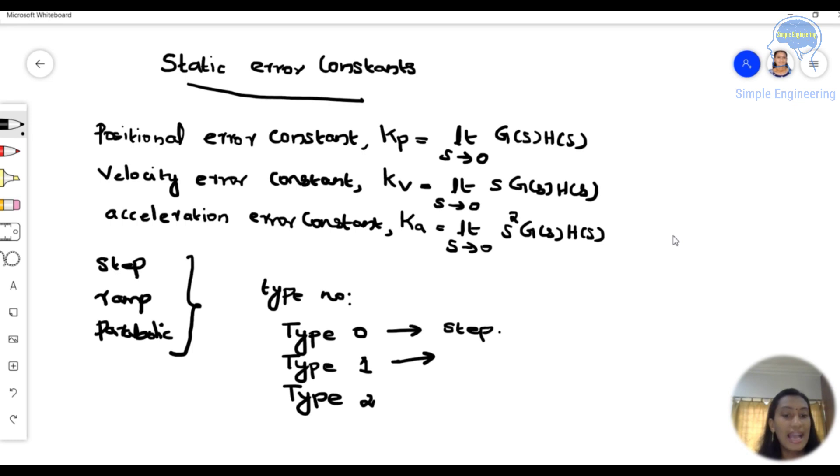Next is type 1 means we have a constant steady state error when the input is ramp. When the input is ramp, that comes under type 1 category.